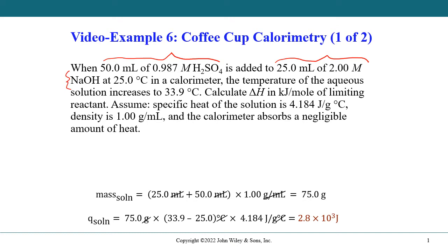We need to calculate the change in enthalpy in kilojoules per mole of the limiting reactant. There's a number of assumptions you have to make. The specific heat of the solution is 4.184 joule per gram degree C, the density is 1 gram per milliliter, and the calorimeter absorbs a negligible amount of heat.